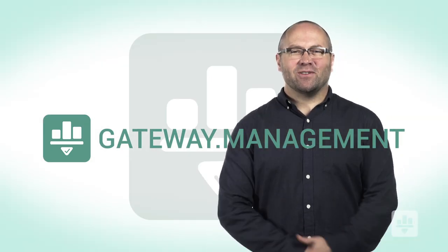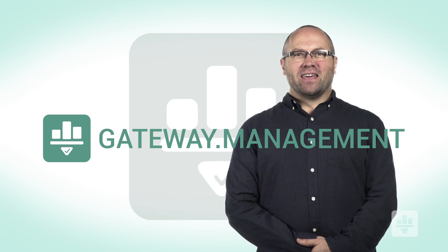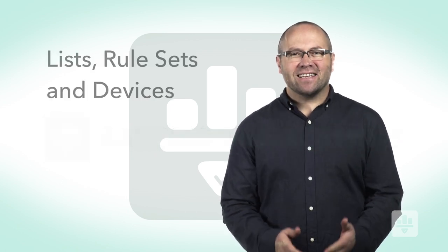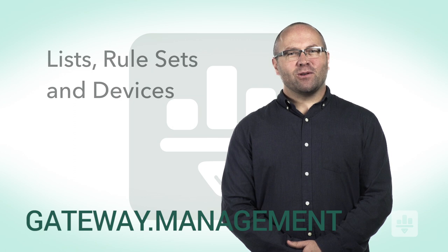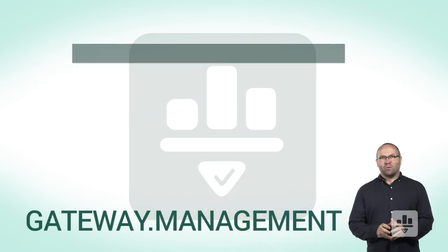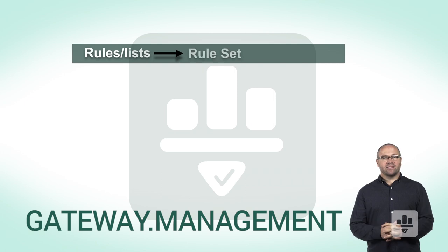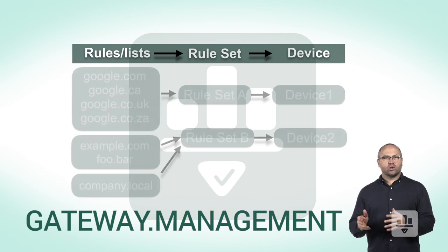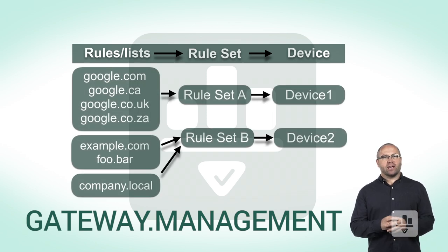Thank you for joining us again in this video series. I would like to show you how lists, rule sets, and devices work. For the relationship thinkers, this will be a piece of cake. We start with domains, or even fully qualified domains, and when we have one or more in a group, we call it a list or a rule. Many different lists or rules can make up a single rule set.